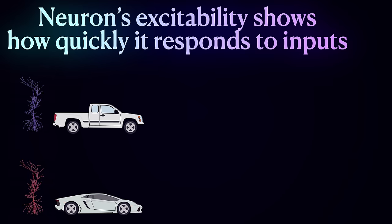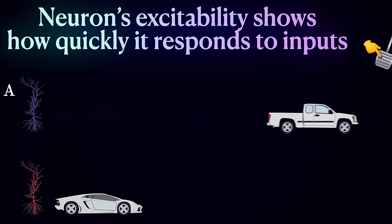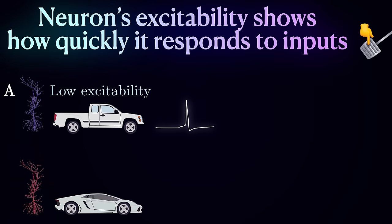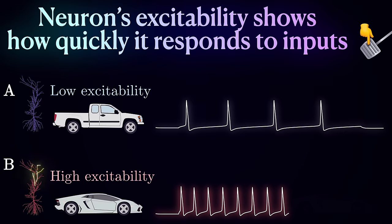Imagine you have different cars, each representing a neuron. The acceleration of a car represents the excitability of a neuron, which determines how quickly it responds to stimuli. Car A has low acceleration, meaning it takes a lot of effort on the gas pedal to make it move faster. Similarly, a neuron with low excitability requires a strong and sustained input to generate an action potential. Car B has high acceleration. It quickly responds to even a light touch on the gas pedal, rapidly increasing its speed. Similarly, a neuron with high intrinsic excitability can generate action potentials readily, even with a weak input.